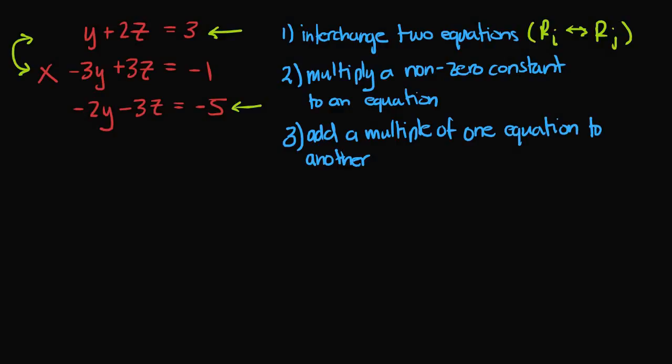Secondly, we can multiply a non-zero constant to an equation. The notation for this is some constant times ri. This means I can take any row — r1, r2, or r3 — and multiply it by some real number other than zero. For example, I could take r2 and multiply it by negative 1.5.